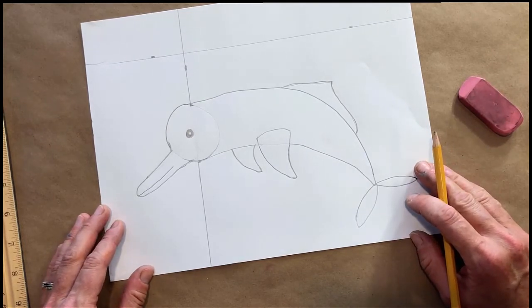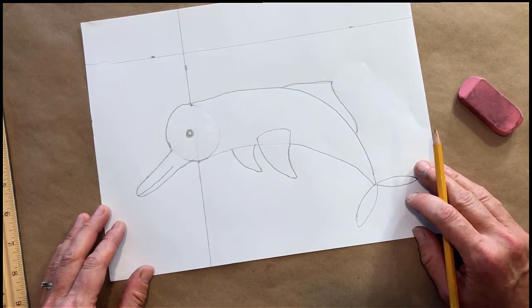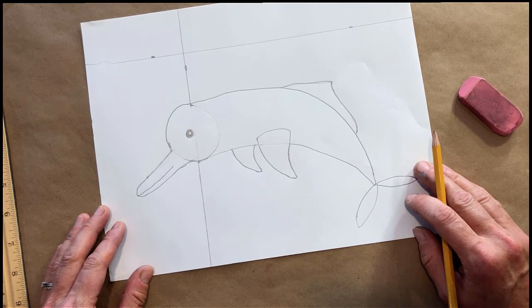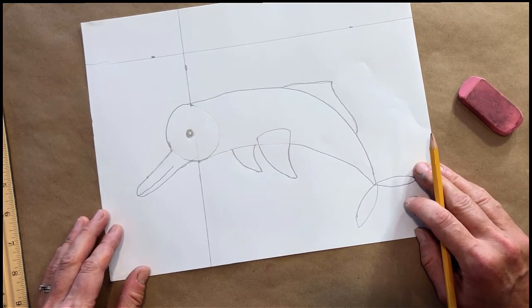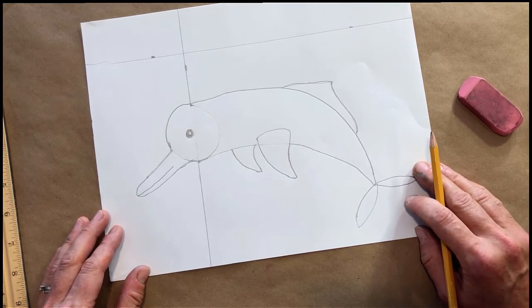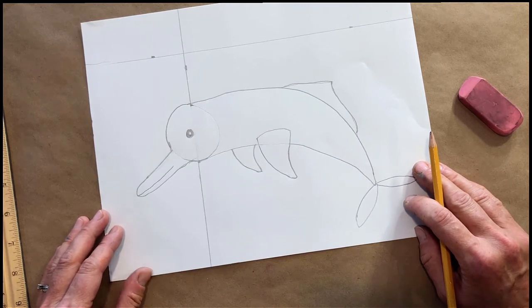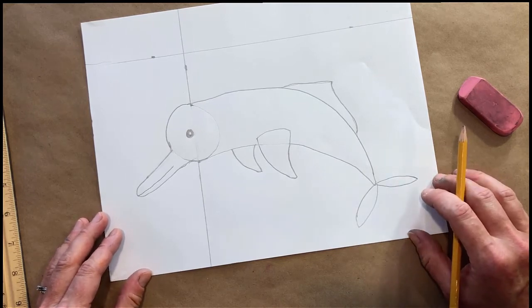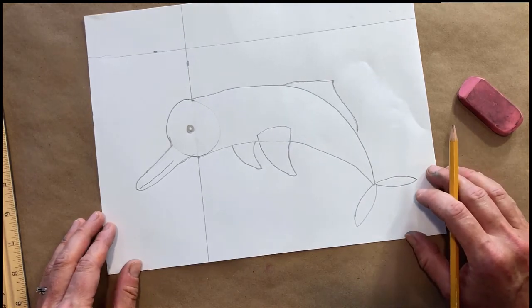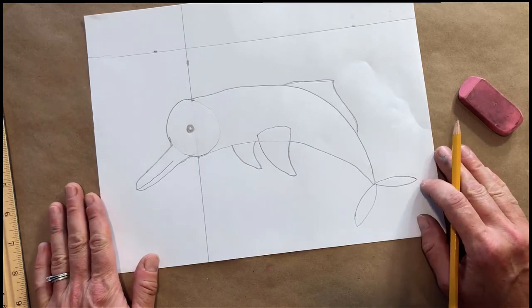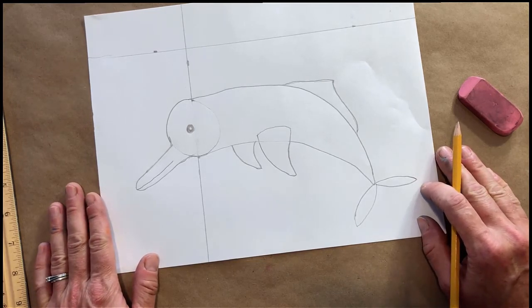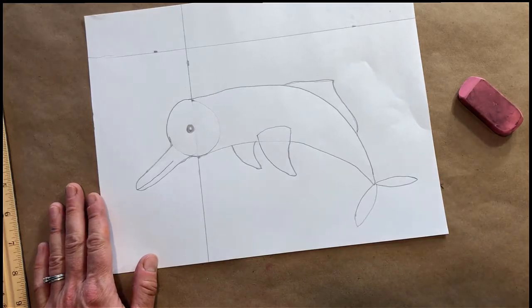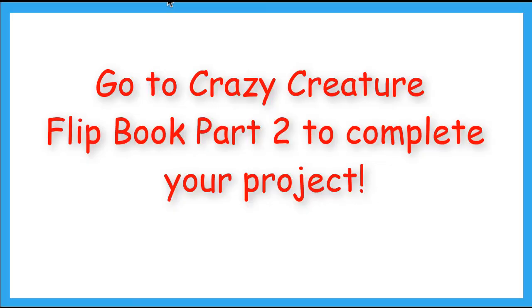So that is a pink river dolphin. Did you know that pink river dolphins are rare and they live in the Amazon river? They only swim in fresh water. So you just drew a pink Amazon river dolphin. Give yourself a pat on the back. Go to Crazy Creature Flipbook part two to continue this project.